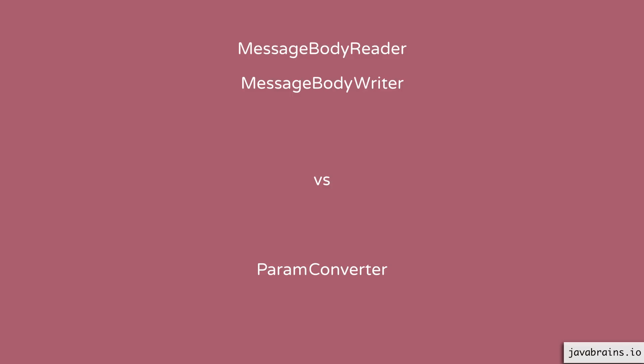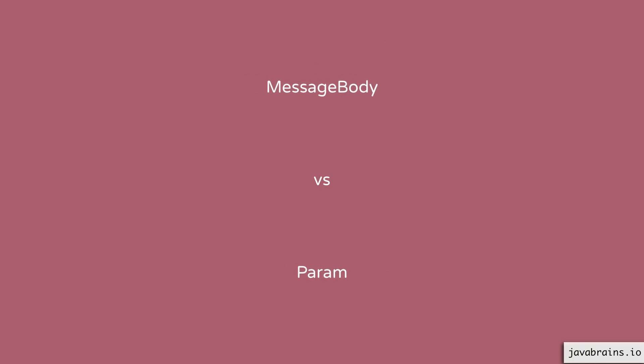The difference is actually in the name: 'message body' versus 'param.' Message body deals with the content of the message. If you make a PUT request, the request itself would contain some payload in the request body — when you're updating a resource, the request body contains the representation of the updated resource. This is different from params. We looked at many param annotations: path param, query param, header param. These are parameters to the request, not the content of the request itself.